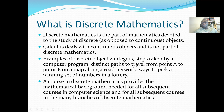The same step-by-step concept applies here. For example, steps taken by a computer program — we can count the number of steps. We can also consider distinct paths to travel from point A to B on a map along a road network, or ways to pick a winning set of numbers in a lottery. A course in discrete mathematics provides the mathematical background needed for all subsequent courses in computer science, and in most schools it is a required course.